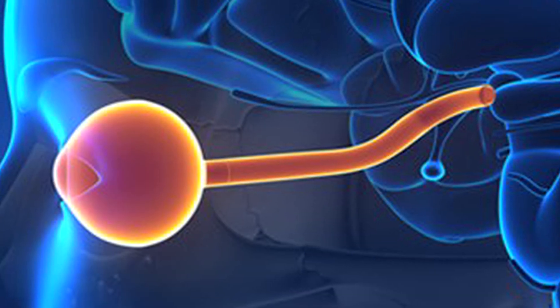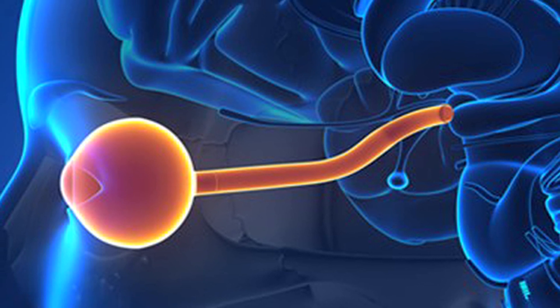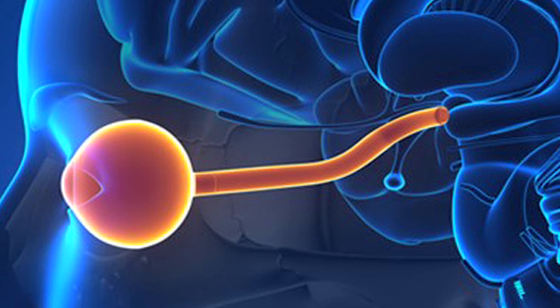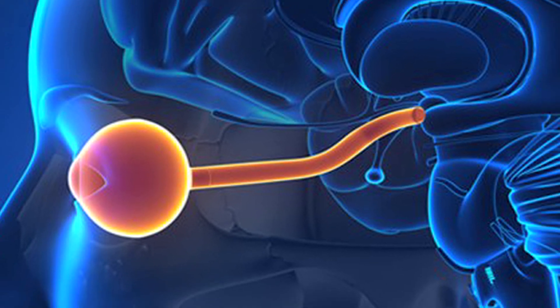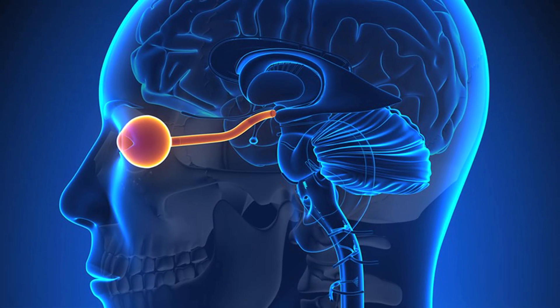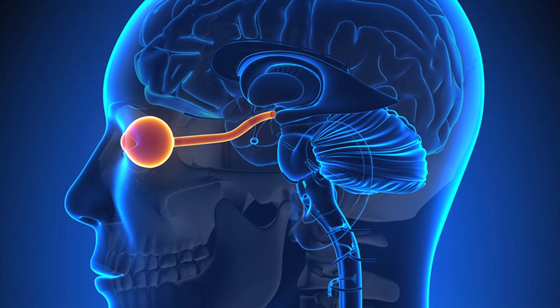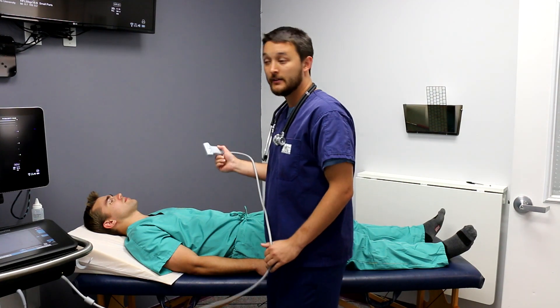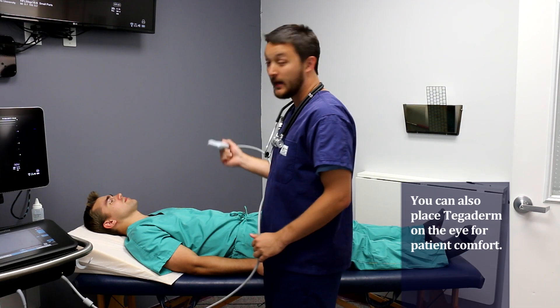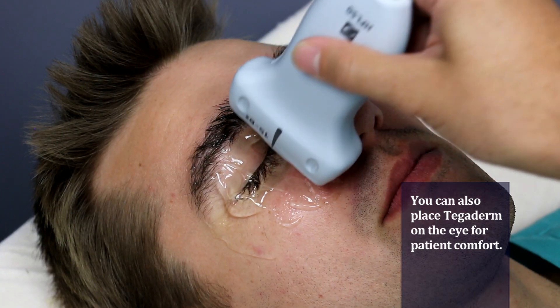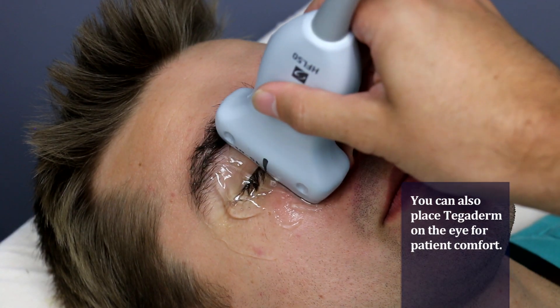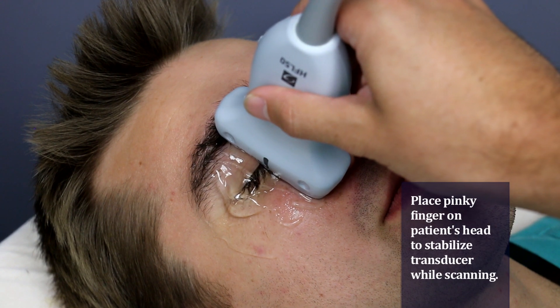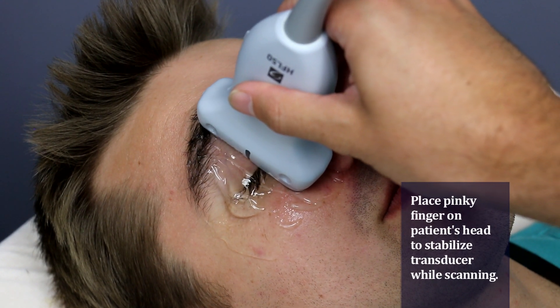Recall your anatomy that the optic sheath houses the optic nerve just behind the eye and is actually continuous with the dura of the brain. With increased intracranial pressure, the optic sheath will actually increase in diameter. We have our patient look straight ahead, and then it's time to begin the exam. Using lots of gel allows us to perform this exam without putting too much pressure on the globe.